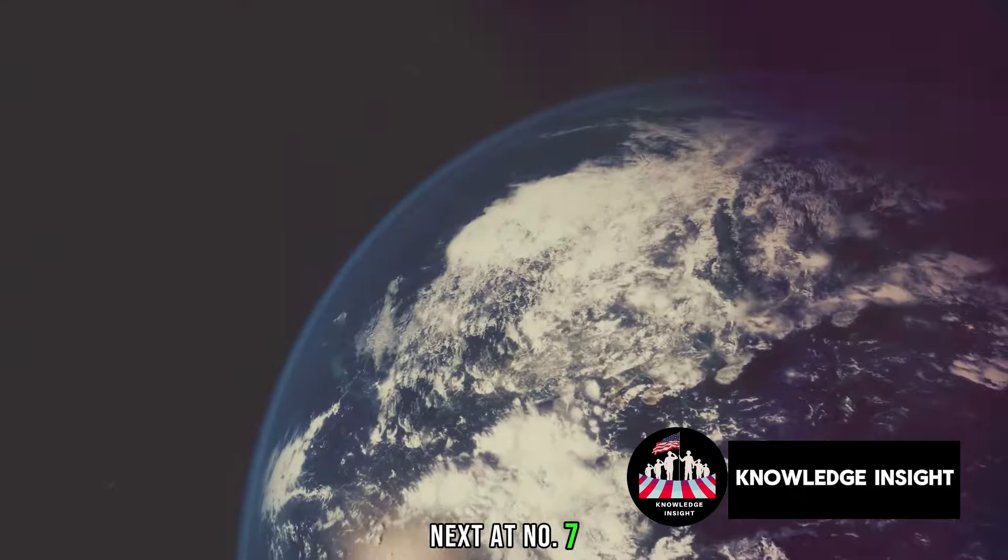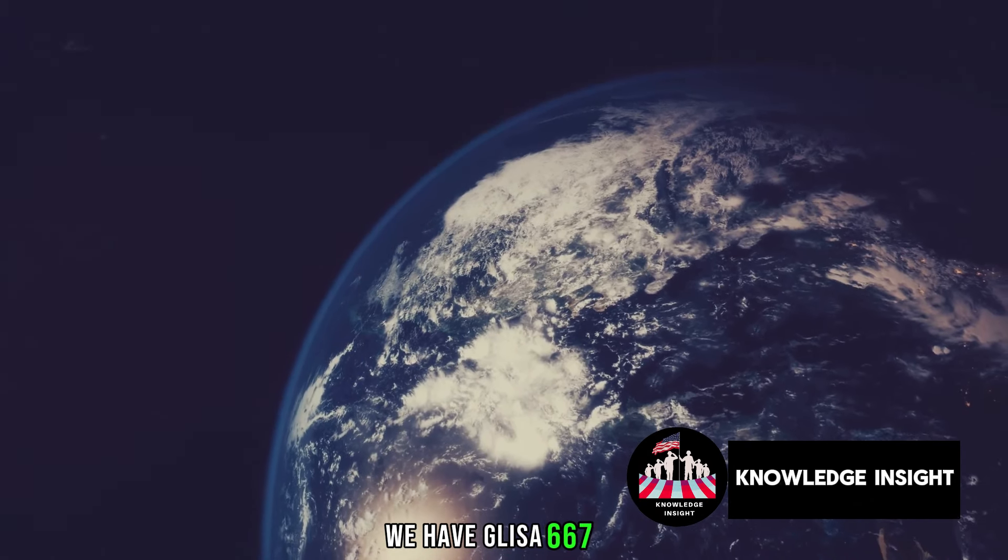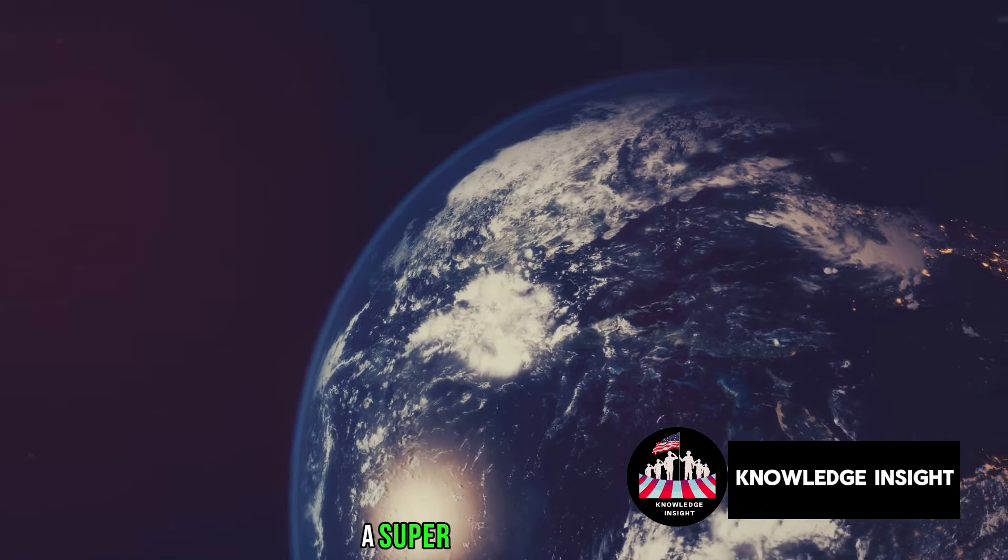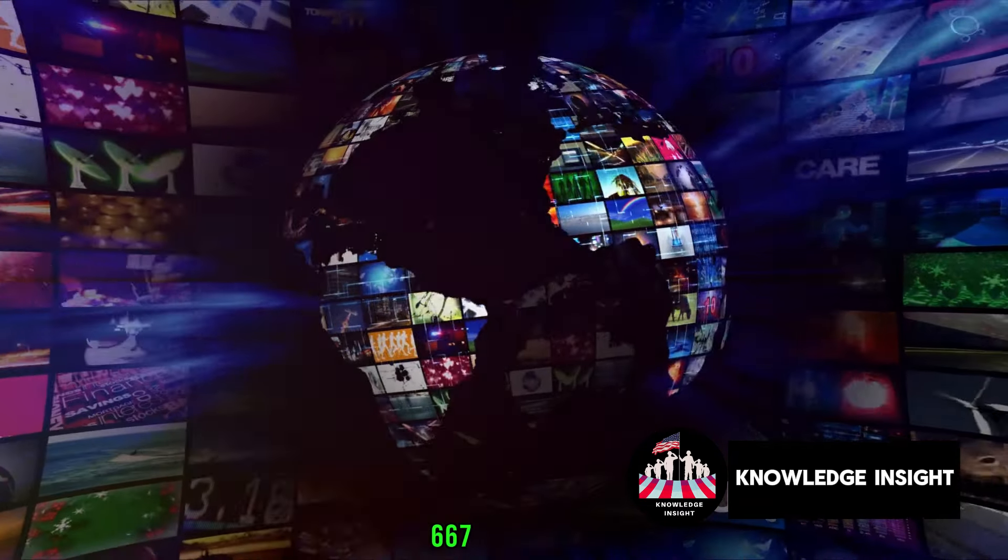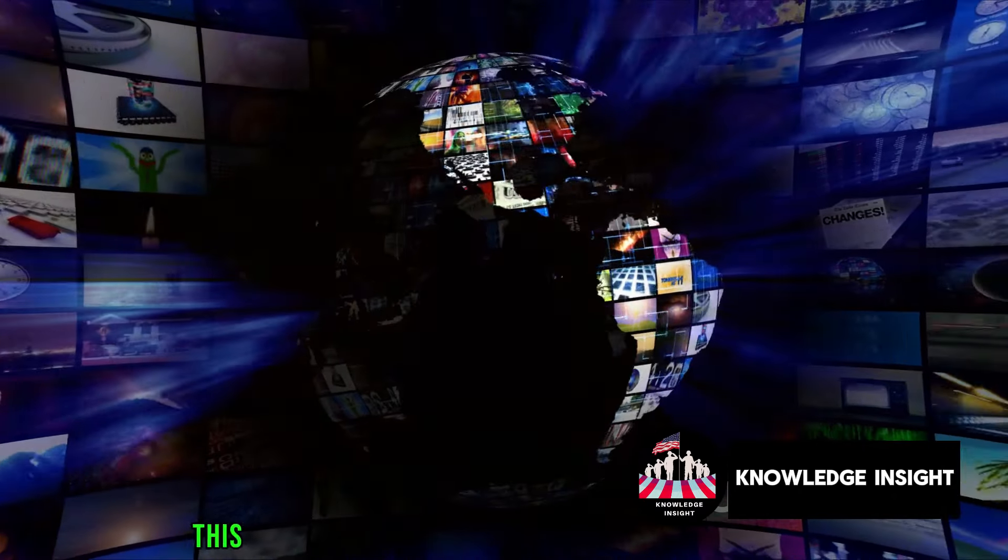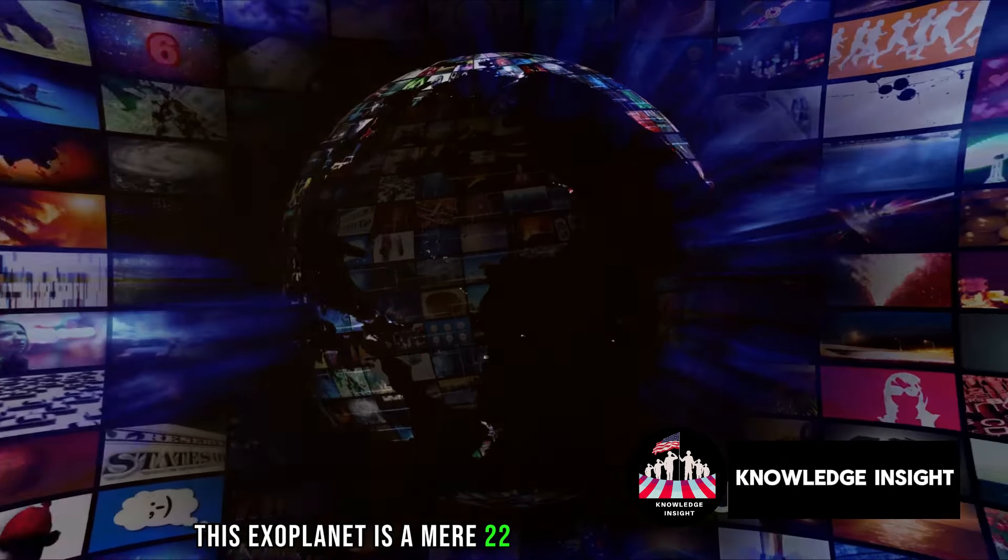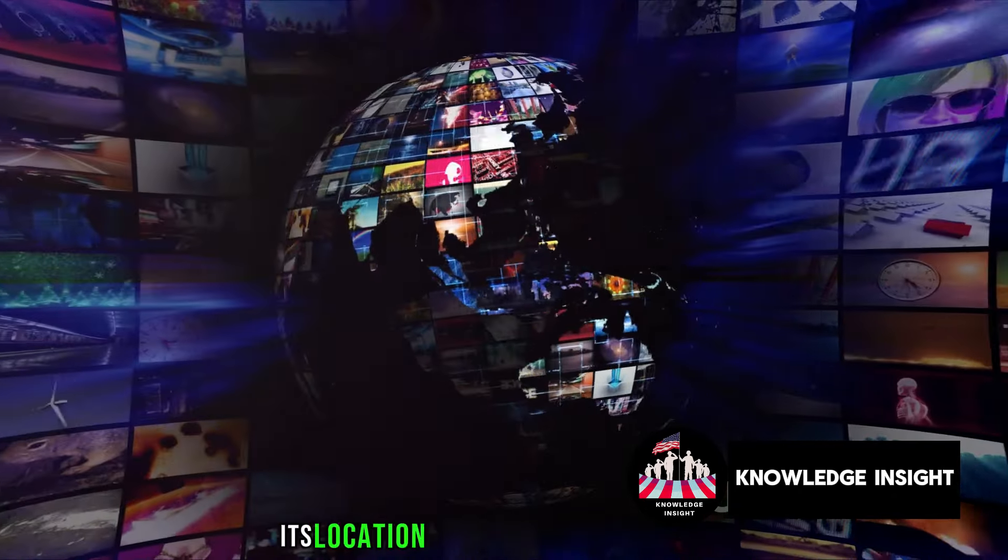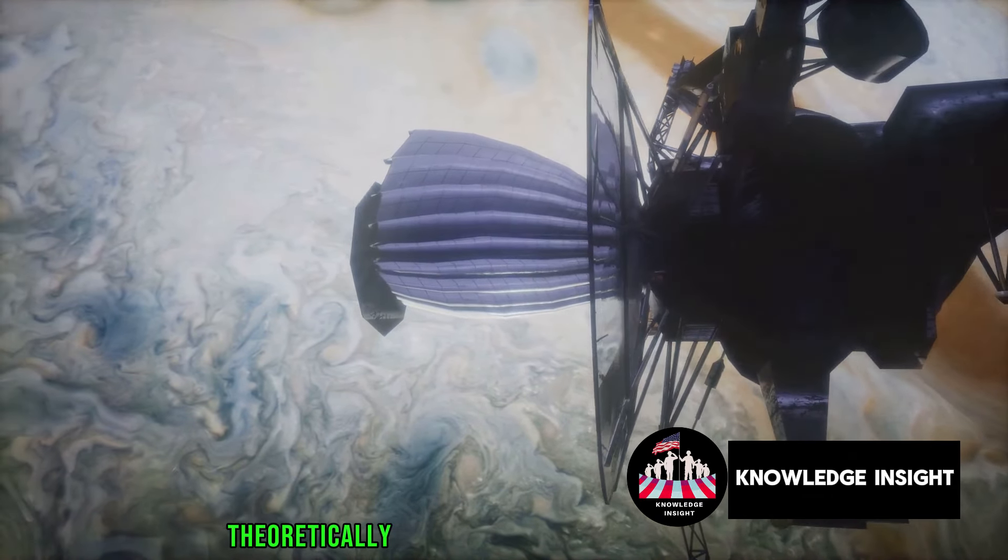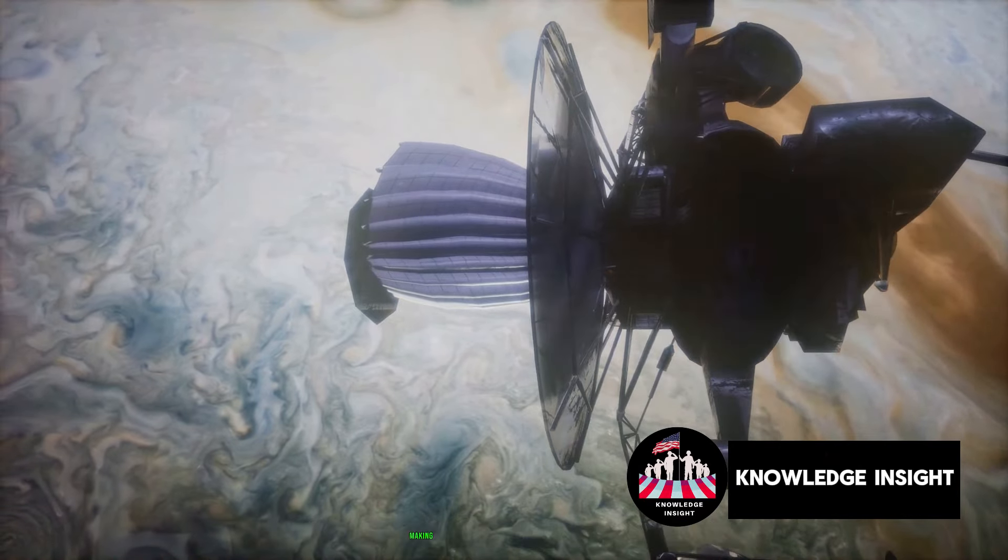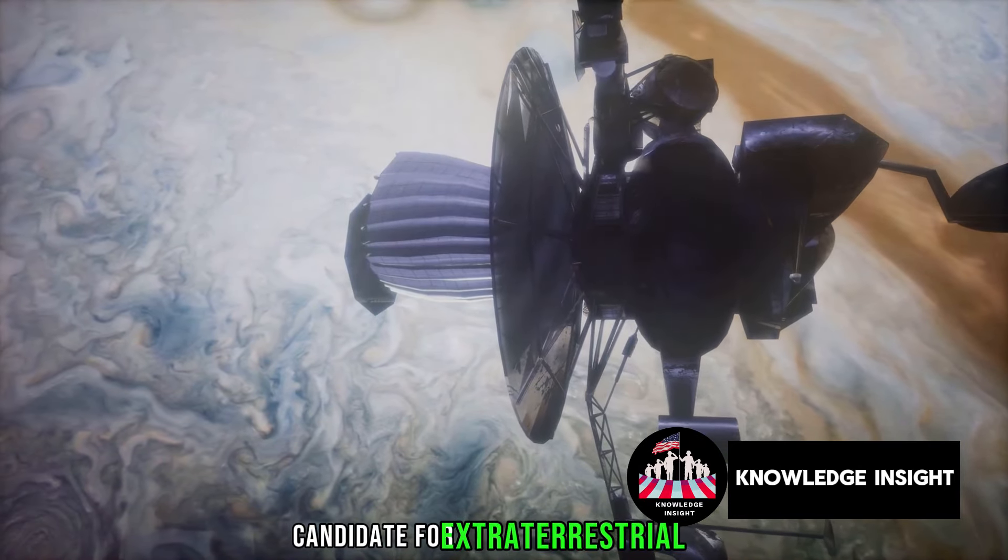Next at number 7, we have Gliese 667cc, a super-Earth exoplanet orbiting within the habitable zone of the Gliese 667c star. This exoplanet is a mere 22 light-years away from us. Its location within the habitable zone means that it could, theoretically, have conditions similar to Earth, making it a potential candidate for extraterrestrial life.